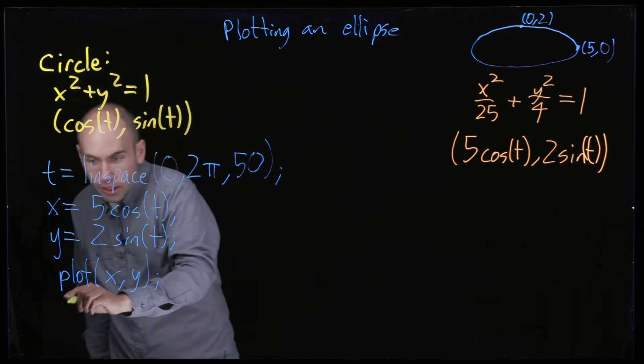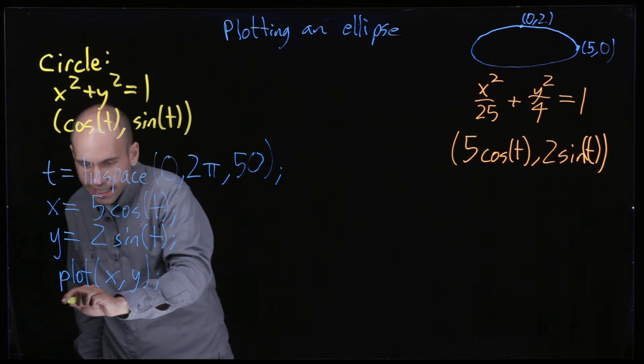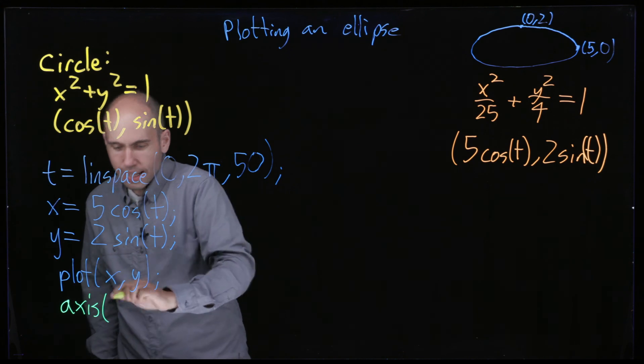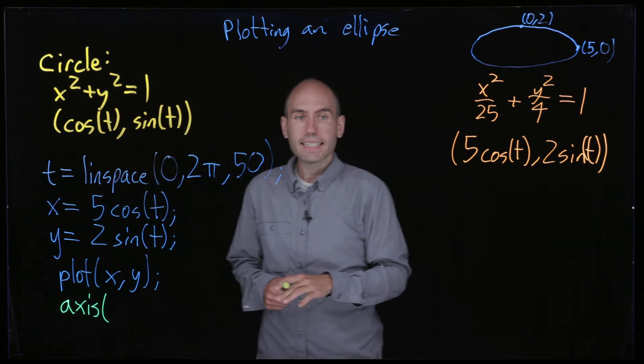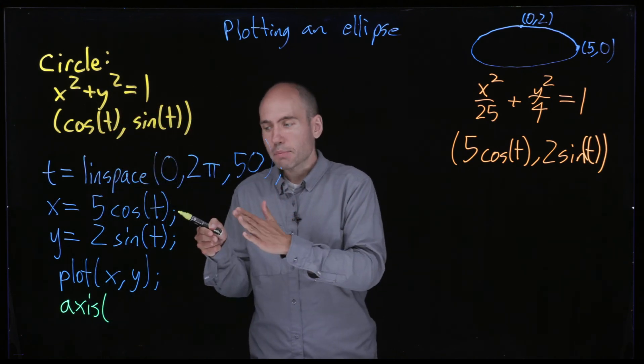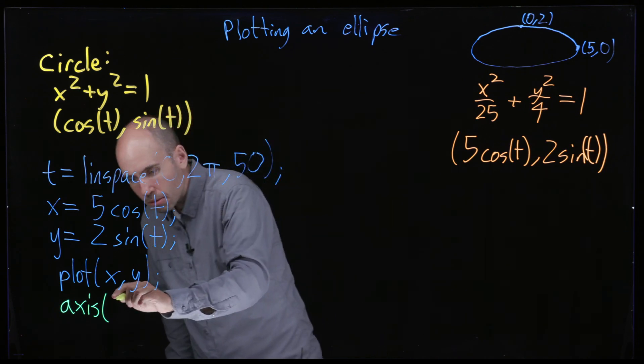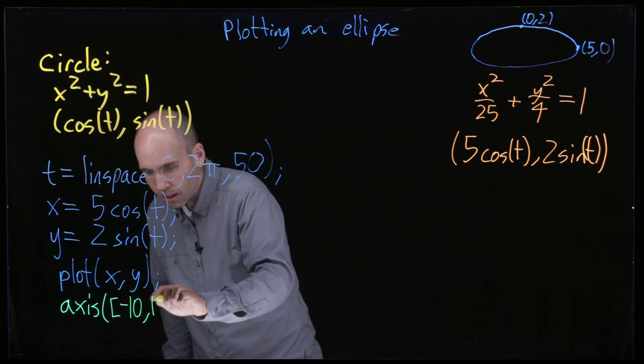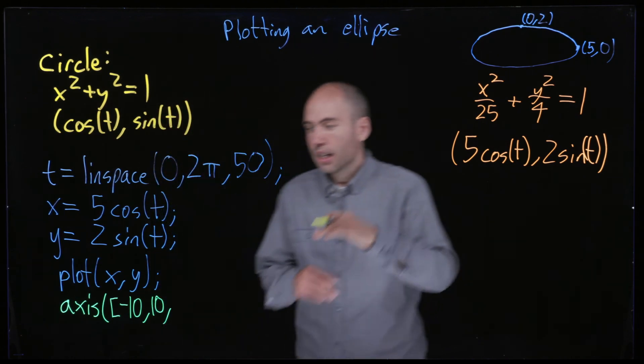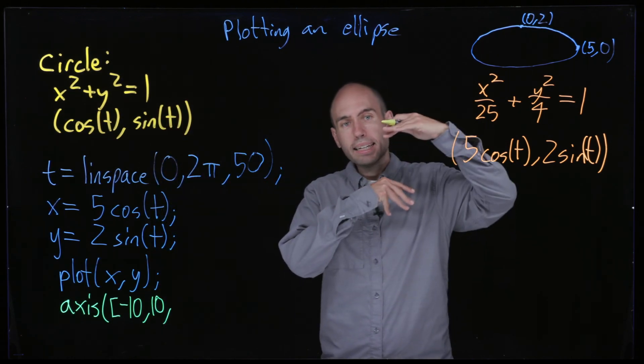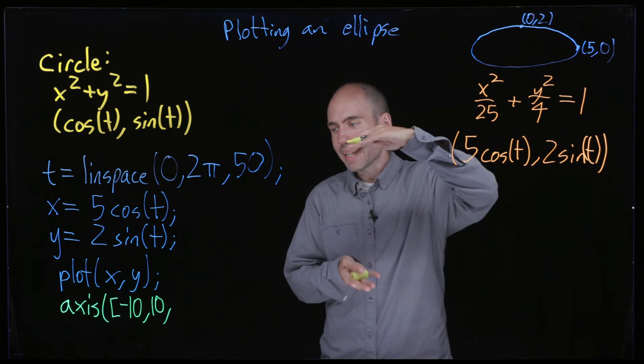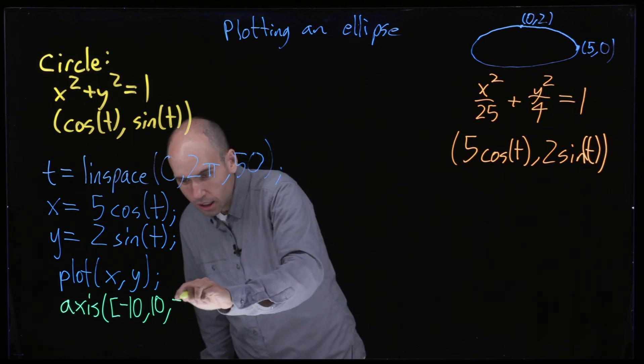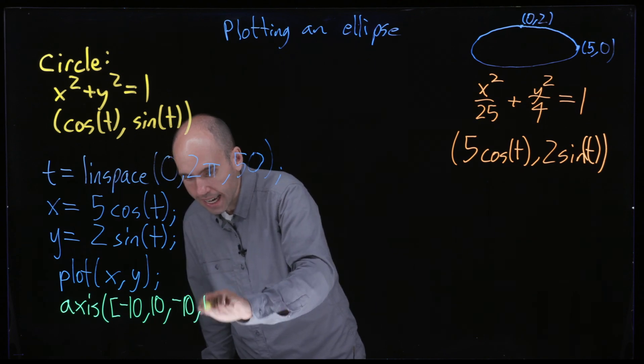And so how can we correct this? I can add one more command at the bottom. And axis, I need to tell it what should be the x minimum value and the x maximum value, so let's just take negative 10 to 10. And once I've chosen that, let's use the exact same width of the y range so that the proportions are correct, so let's use negative 10 to 10 also.